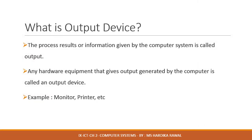First, let us understand what is an output device. The processed results or information given by the computer system is called an output. Any hardware equipment that gives output generated by the computer is called an output device. The most common output devices are monitors, printers, and speakers. A monitor, usually referred to as VDU (Visual Display Unit), gives output as a visual display. A speaker gives out sound, and the printer produces the hard copy on paper. Now let's explore all the output devices.